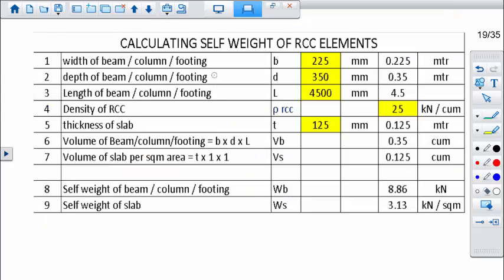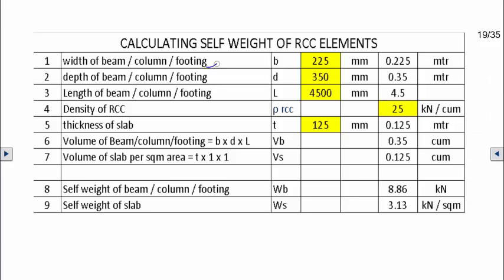This beam, column, footing—anything if we take—has width, depth, and length. In our case we are calculating beam. Beam width is 225 mm converted into meters, divided by 1000. Depth of beam is given in millimeters, converted into meters. Length of beam is in millimeters converted into meters.